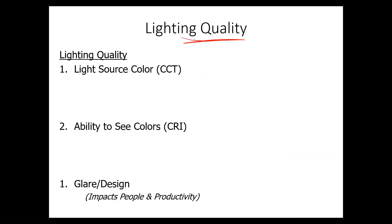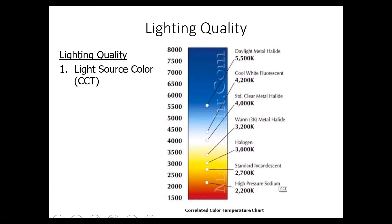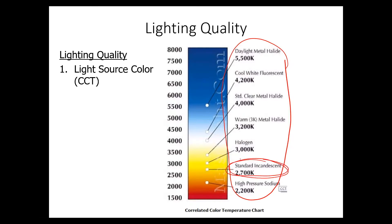Now let's talk about lighting quality, which is composed of three primary areas: light source color, color rendering index, and the relationship between glare and design. The color of the light source is the color you see when you look at the light bulb. Different types of lamps have different color temperatures. Standard incandescent would have a color temperature of around 2700 Kelvin — meaning if this were a star or some hot object, it would be emanating wavelengths of light representative of a 2700 Kelvin surface temperature.